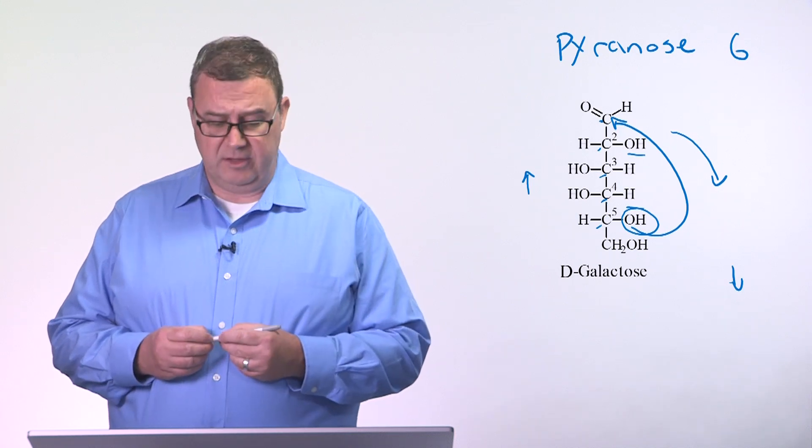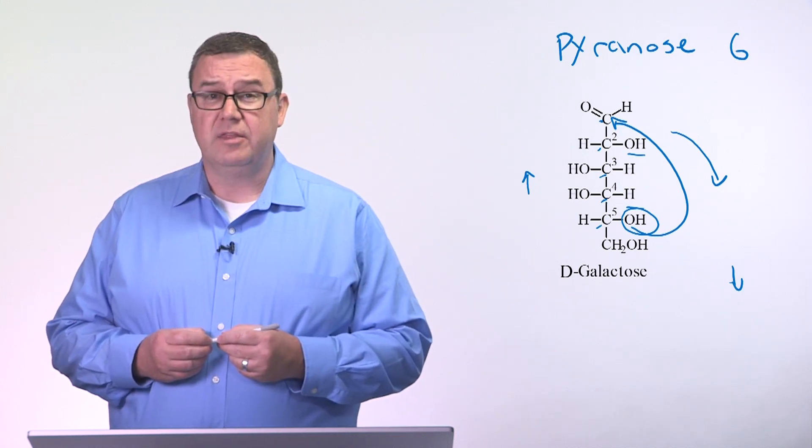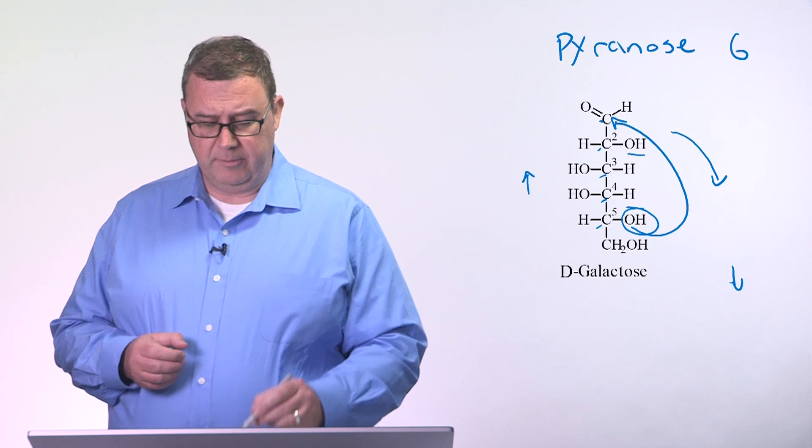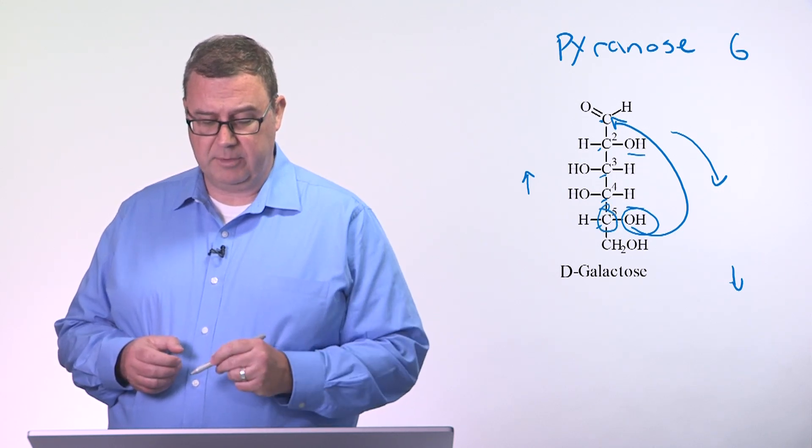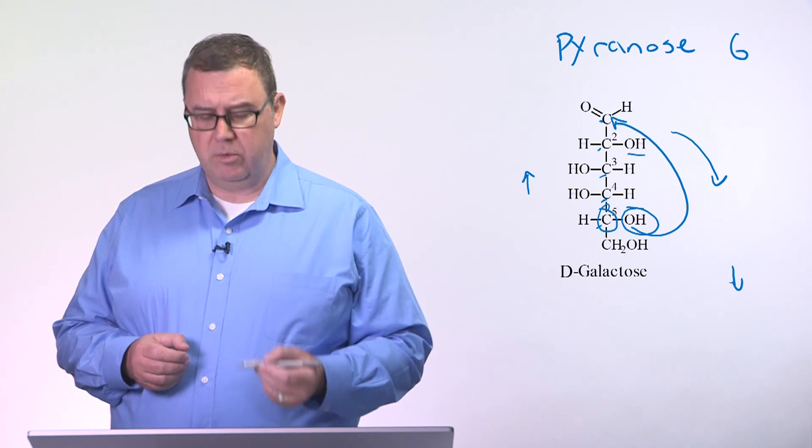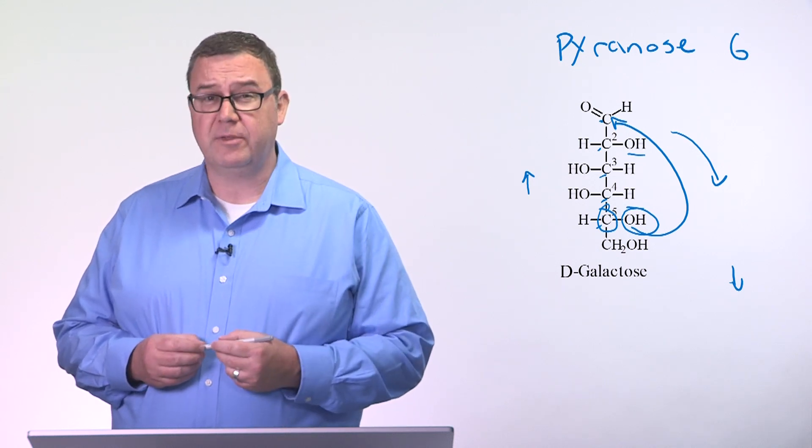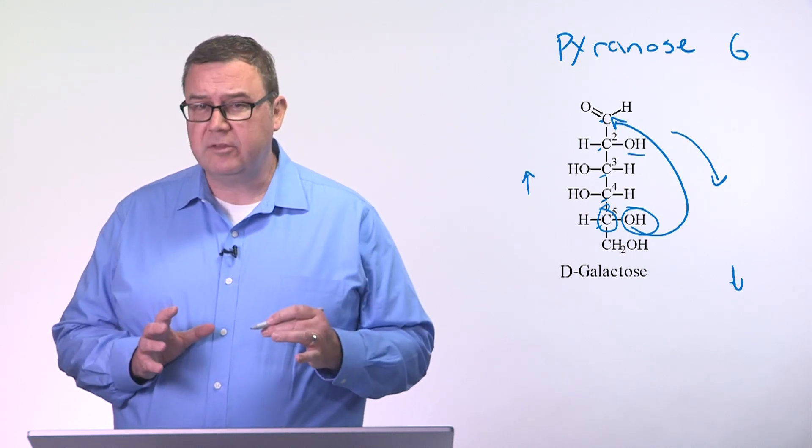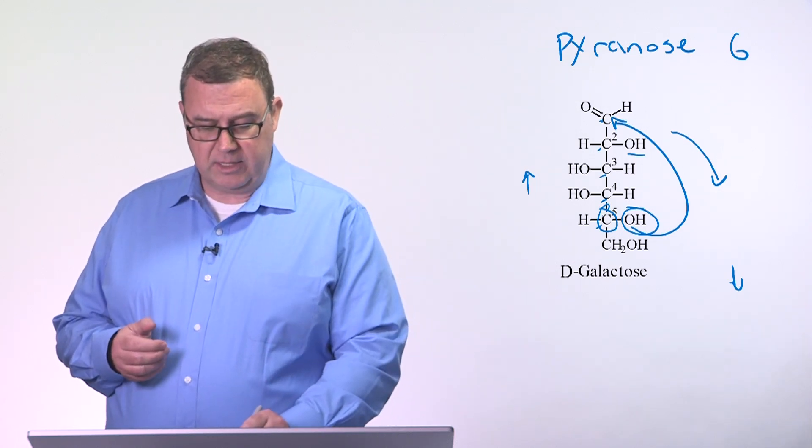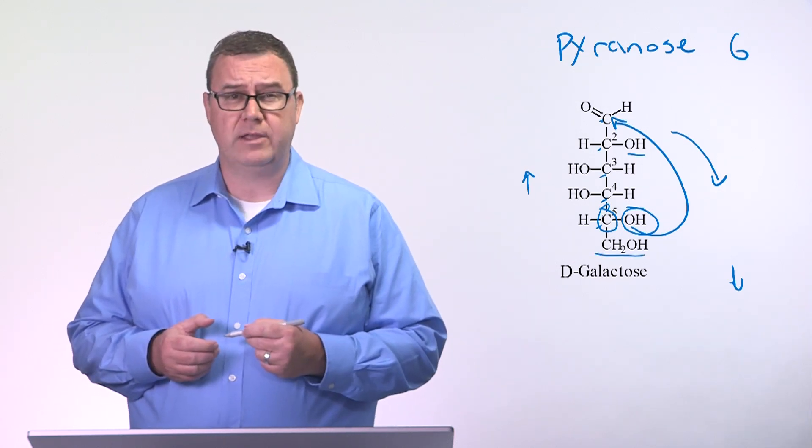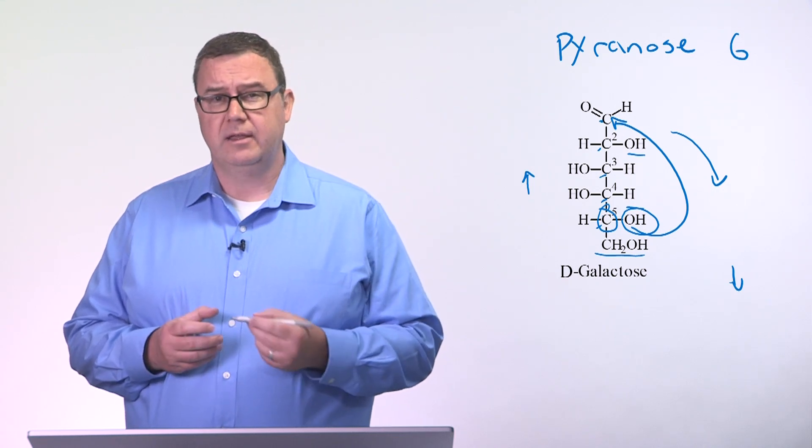We're also told that this is D-galactose. The D designation comes from the stereochemistry around the penultimate carbon, and that's again the five carbon. Now, that won't change the position of the hydroxyl group that's on the five carbon because it won't exist anymore—it's going to be in the ring. Instead, what it will change is the position of the CH2OH group as we're going to see in the next slide.